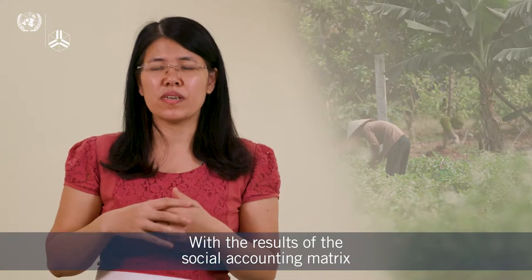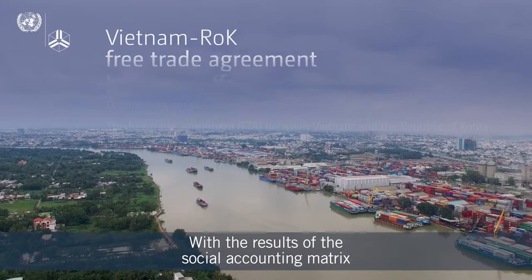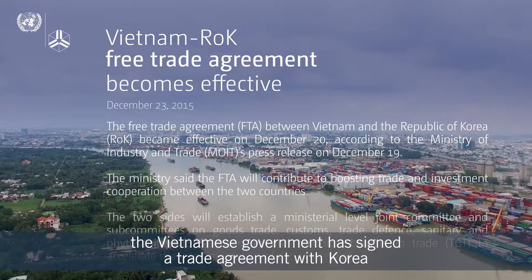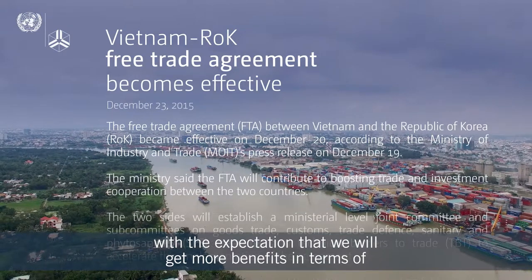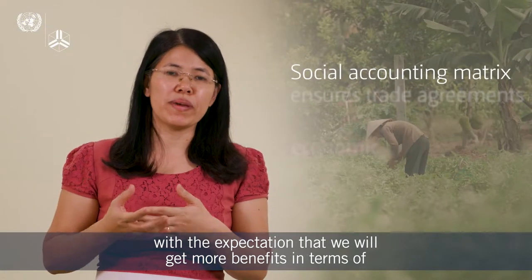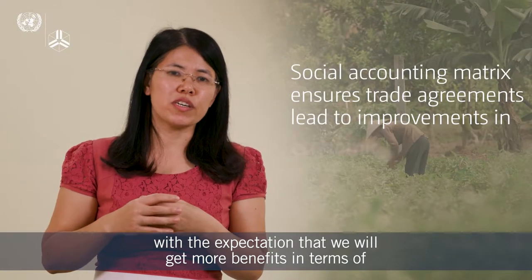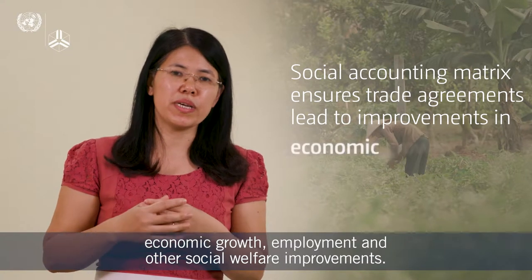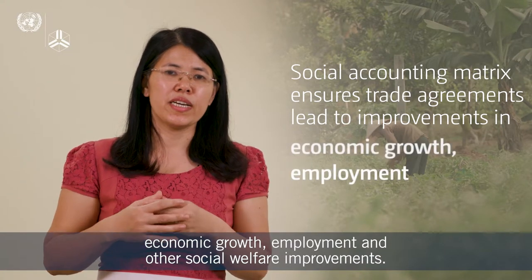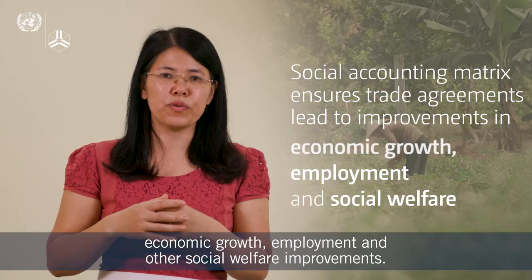With the results of the study using the social accounting matrix, the Vietnamese government signed the trade agreement with Korea, with the expectation that we will get more benefits from this trade agreement in terms of economic growth, employment, and other social welfare improvements.